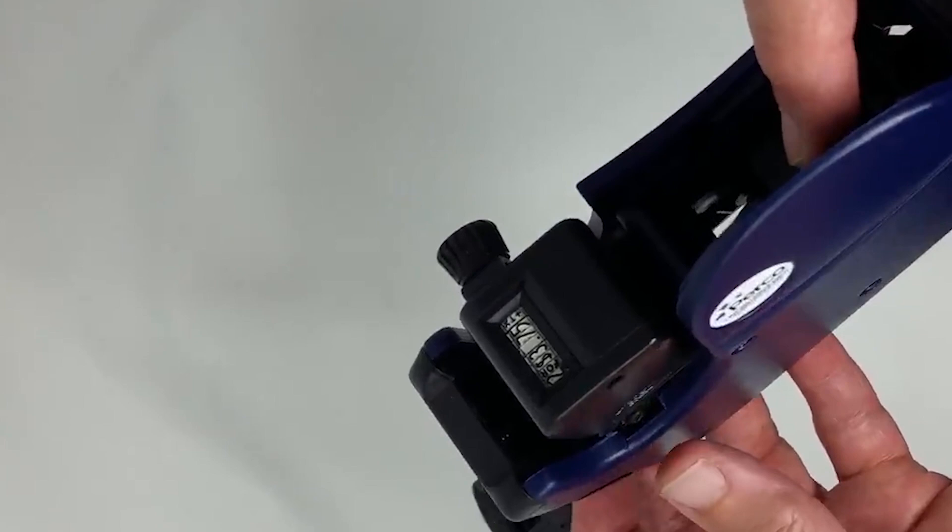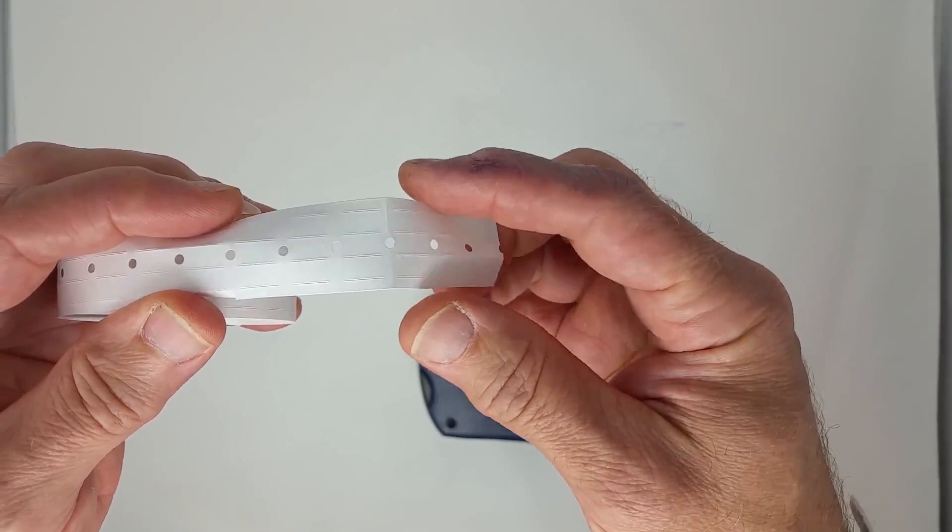To load the labels, pick up a roll of labels and pinch the end of the roll making a small fold. This will make it easier to guide it down the center of the gun.